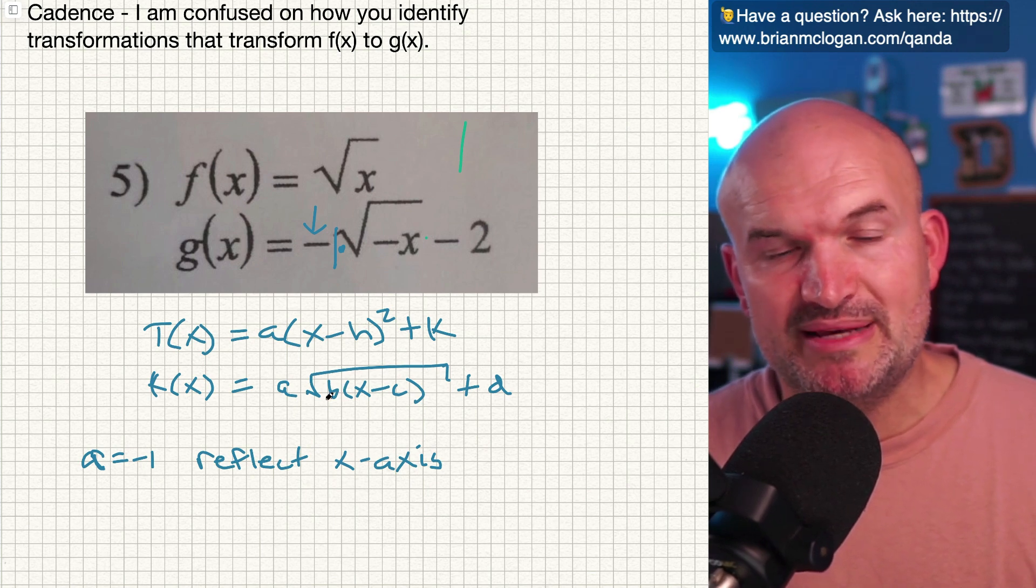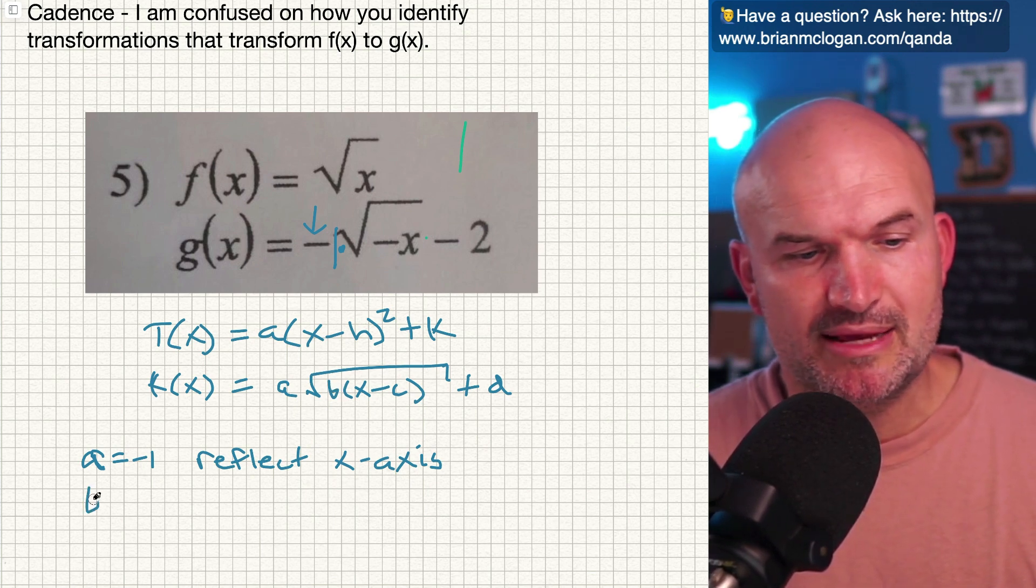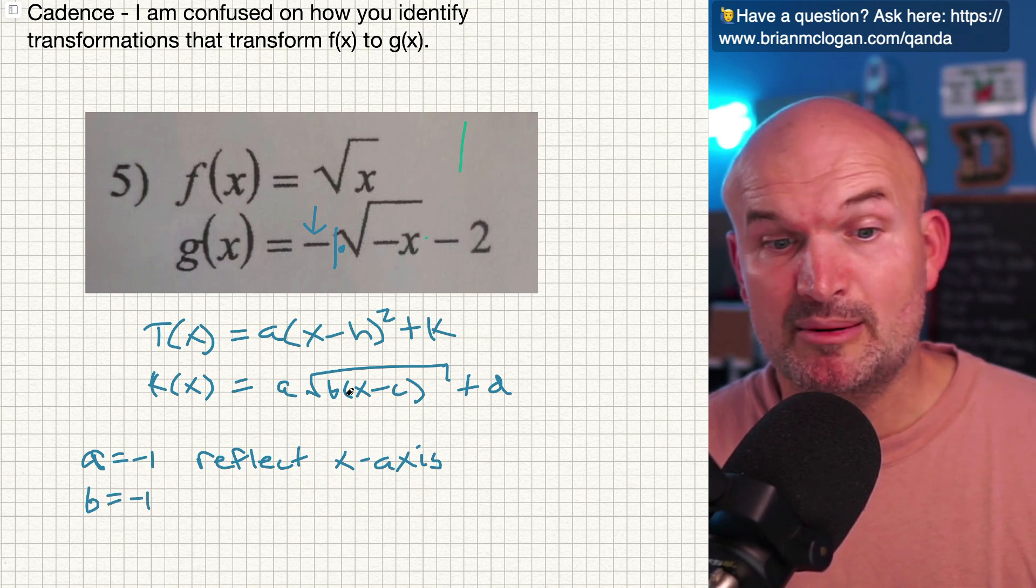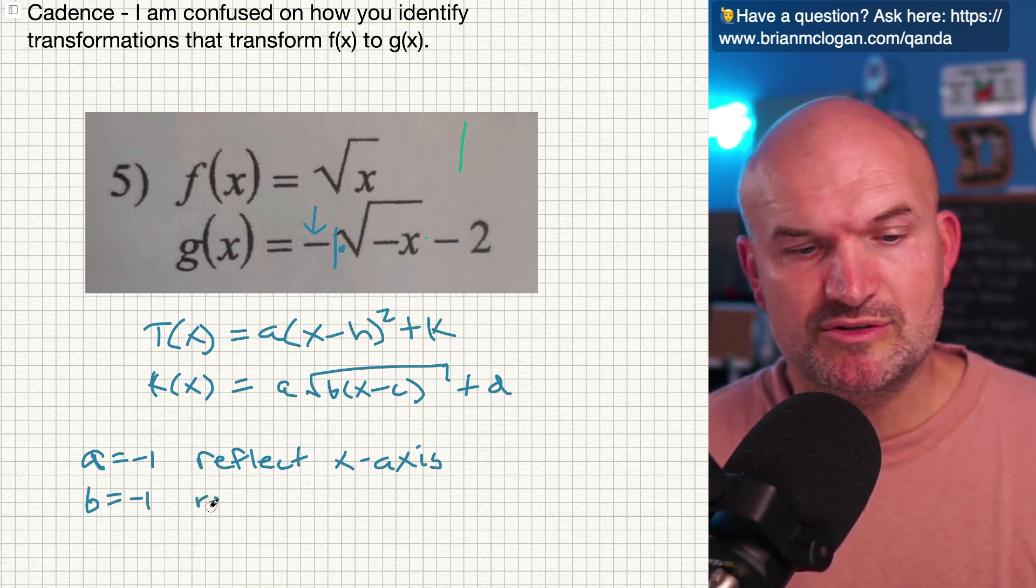However, when we have a b, that is going to be a reflection about the y-axis. So we could say b is equal to negative one, right? That's the number multiplying by your x. So that's going to be reflect.